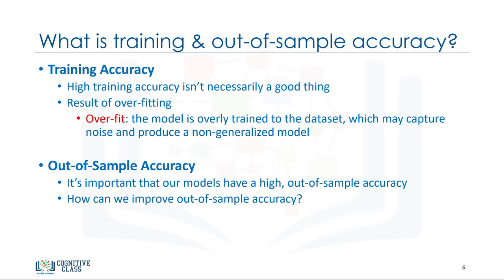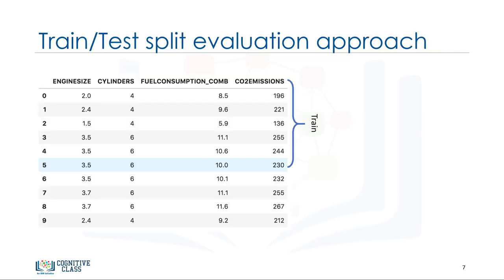One way is to use another evaluation approach called Train-Test-Split. In this approach, we select a portion of our data set for training, for example, row 0 to 5, and the rest is used for testing, for example, row 6 to 9. The model is built on the training set. Then, the test feature set is passed to the model for prediction.